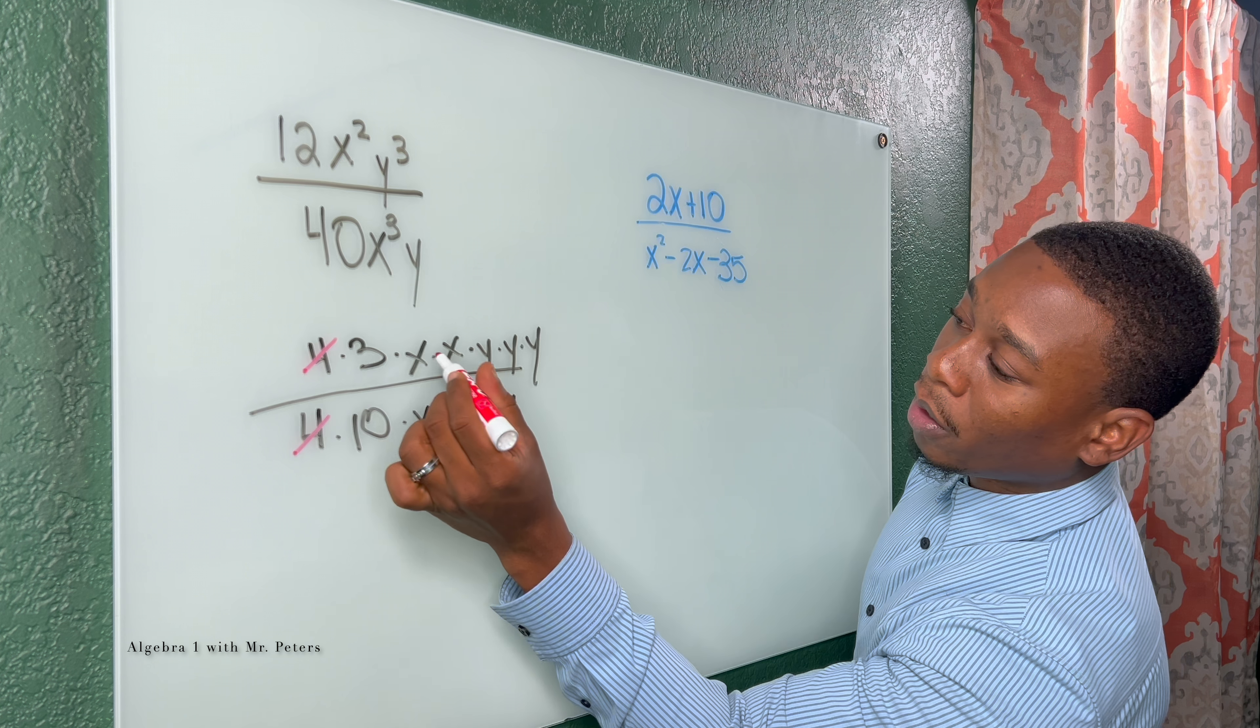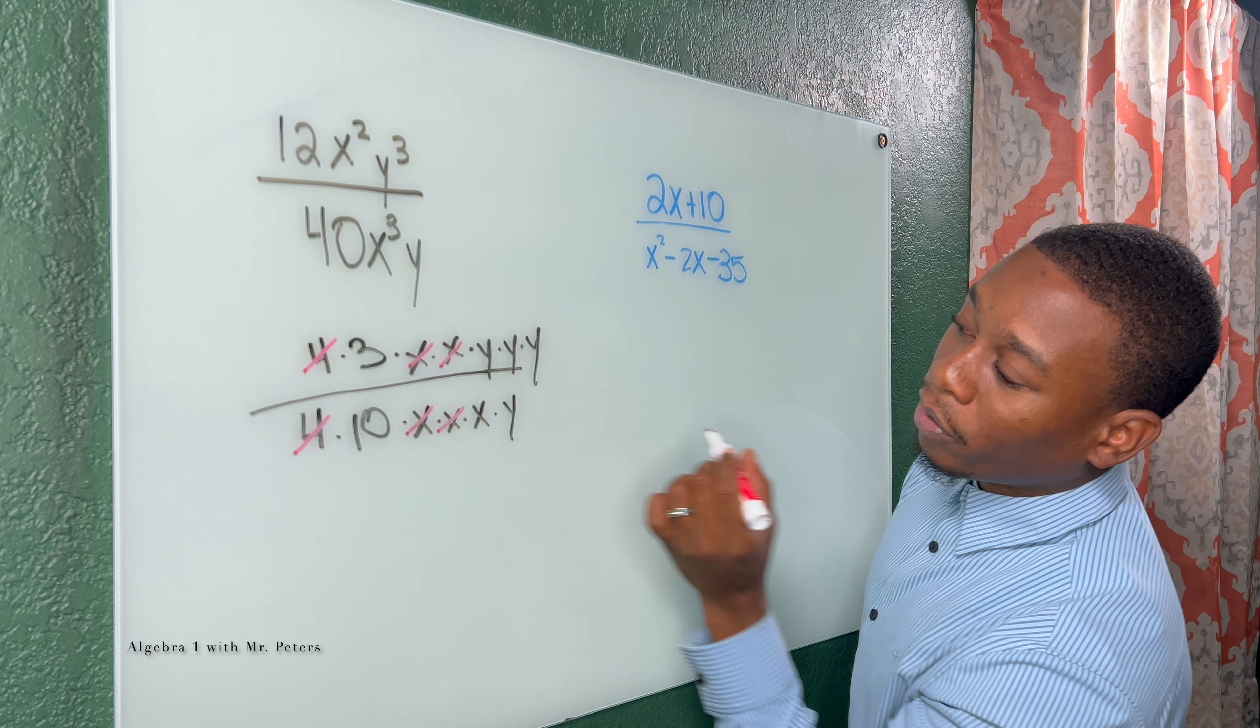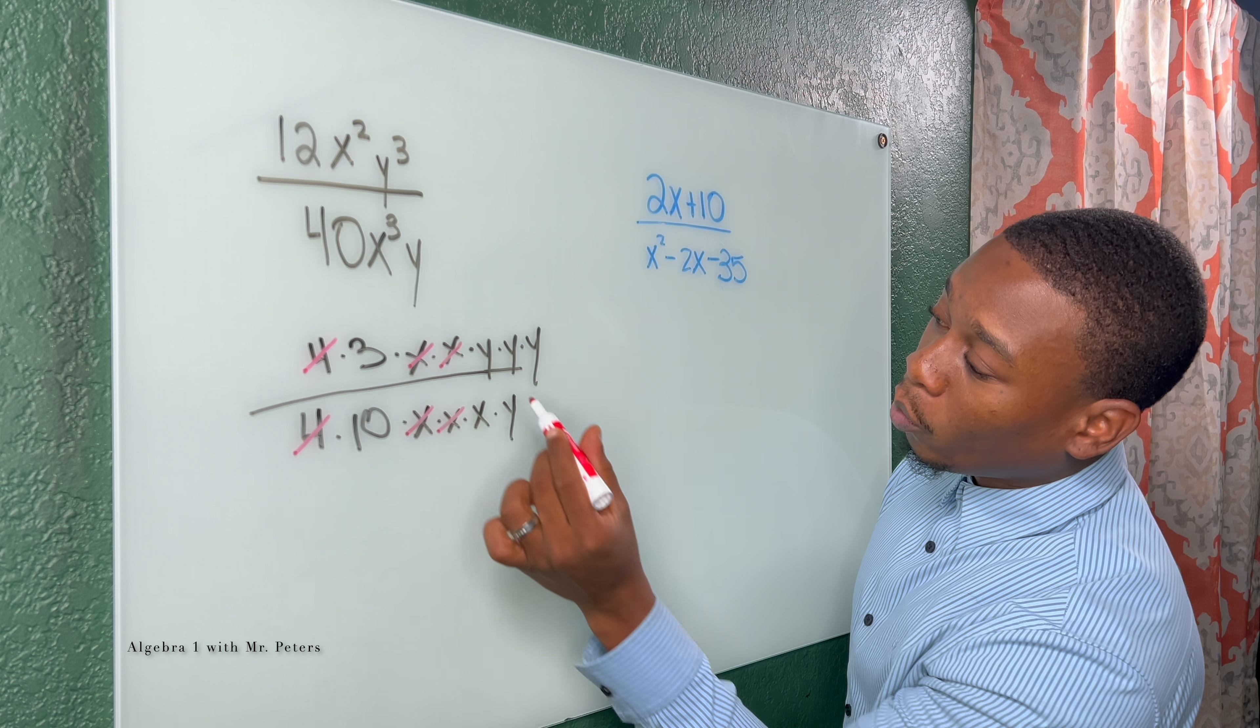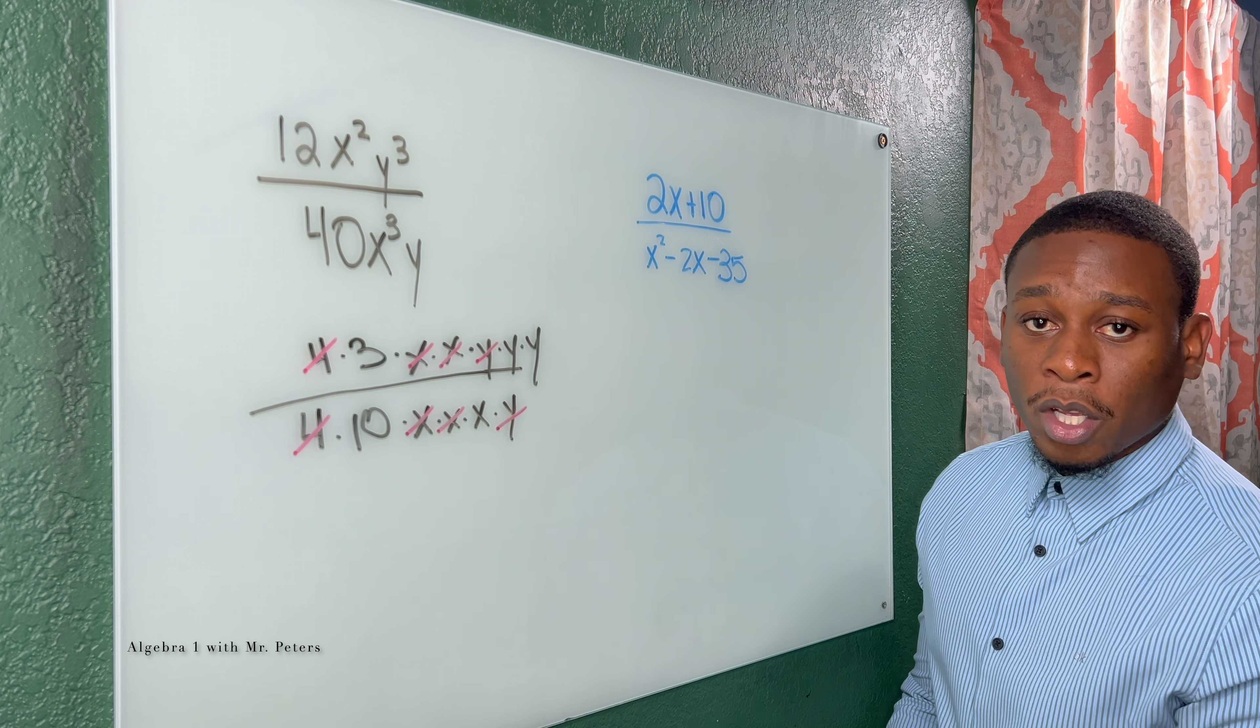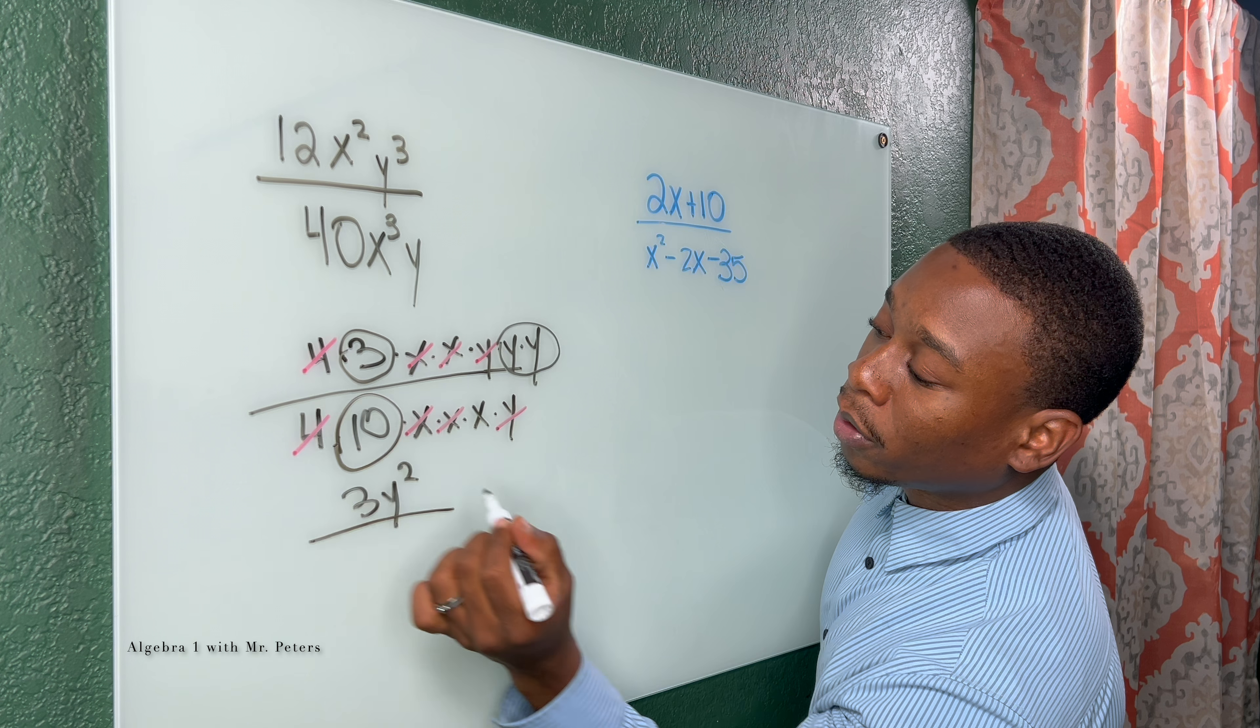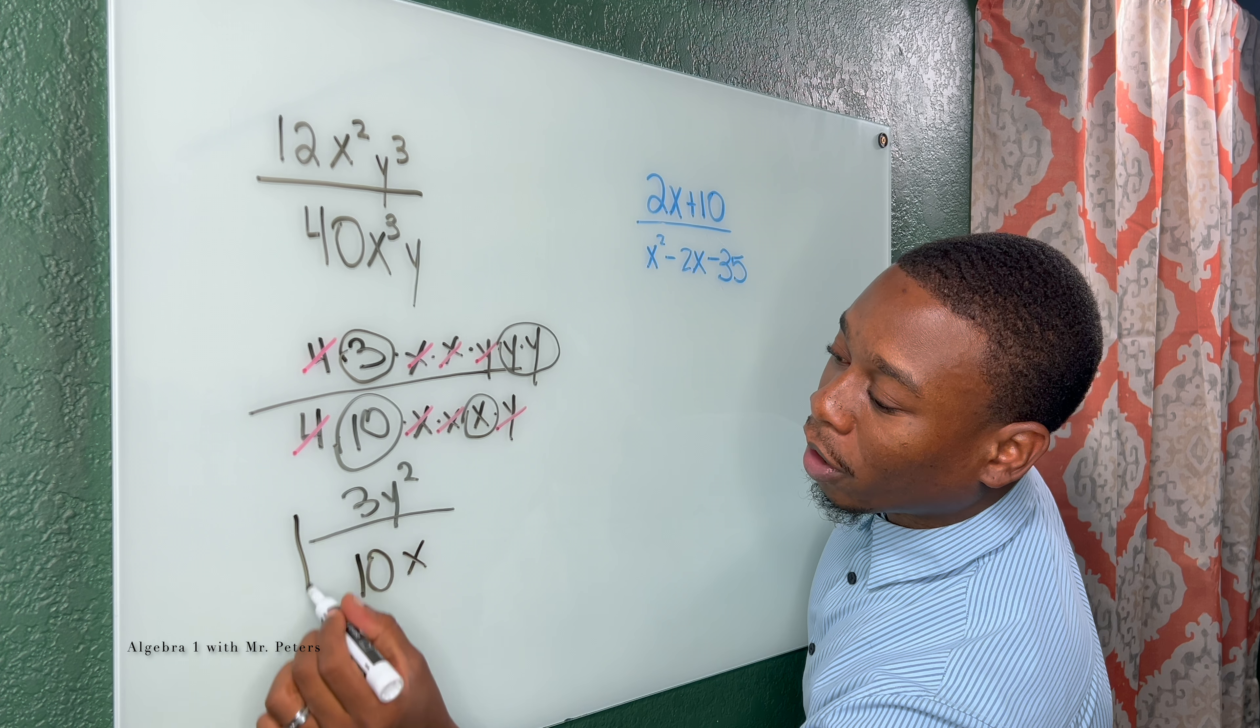So 4 cancels out. Those two x's cancel out. We have another x cancel out. And then we could cancel one of our y's. So what we're left over with is 3y squared all over 10x. So this is our final answer.